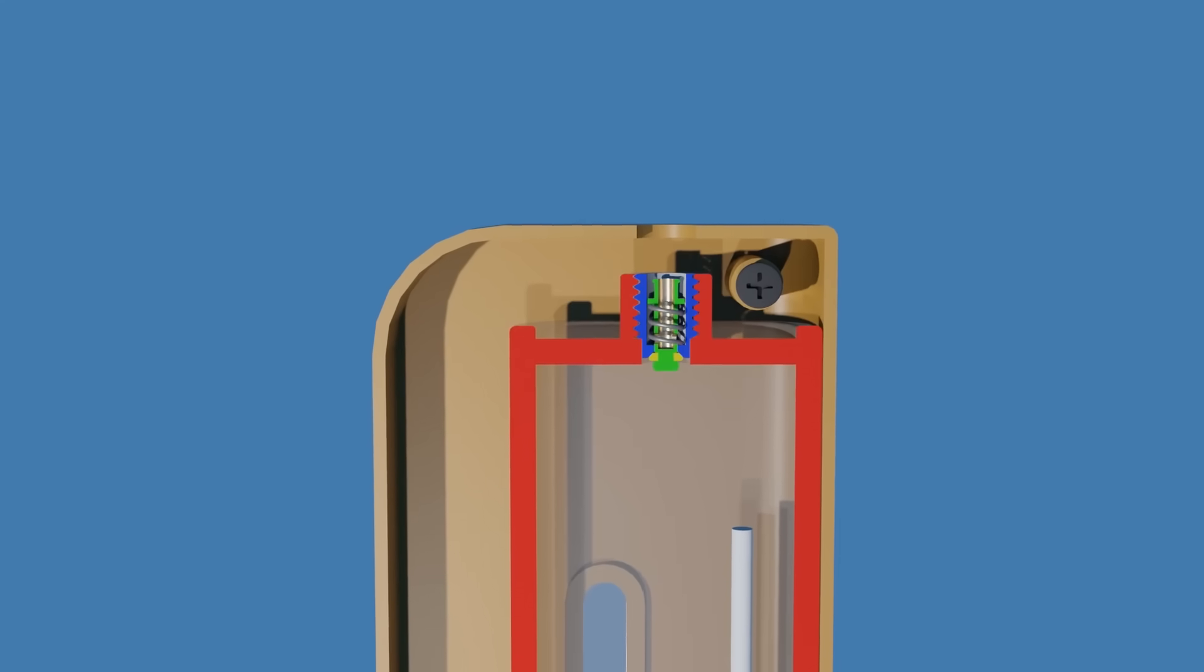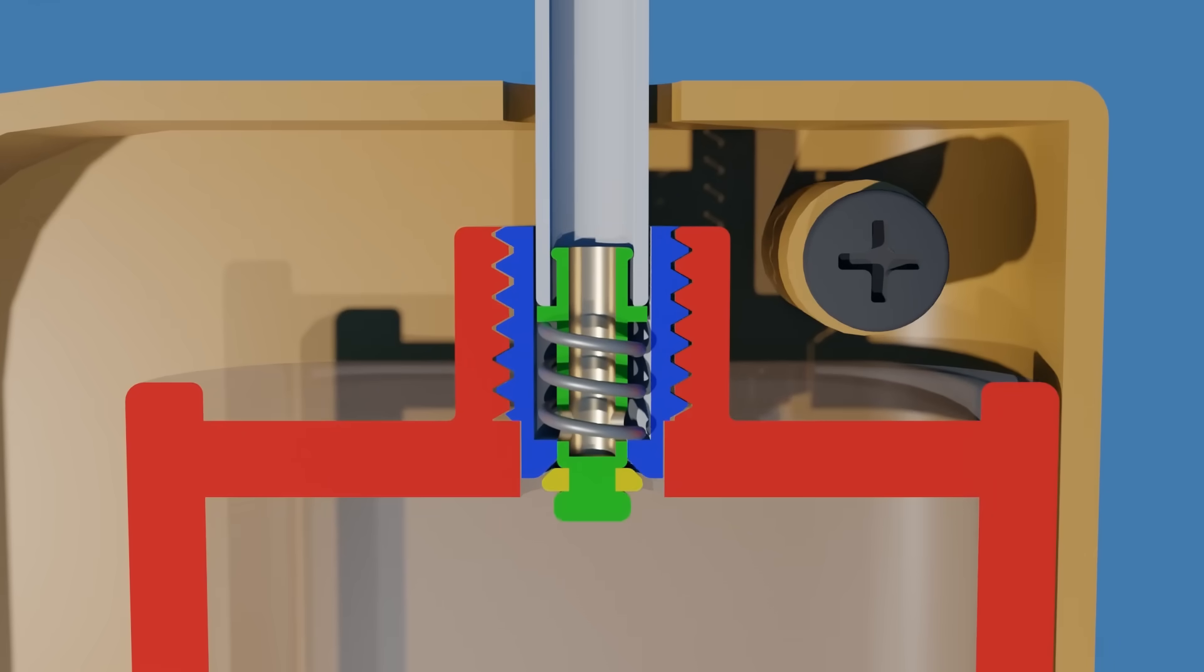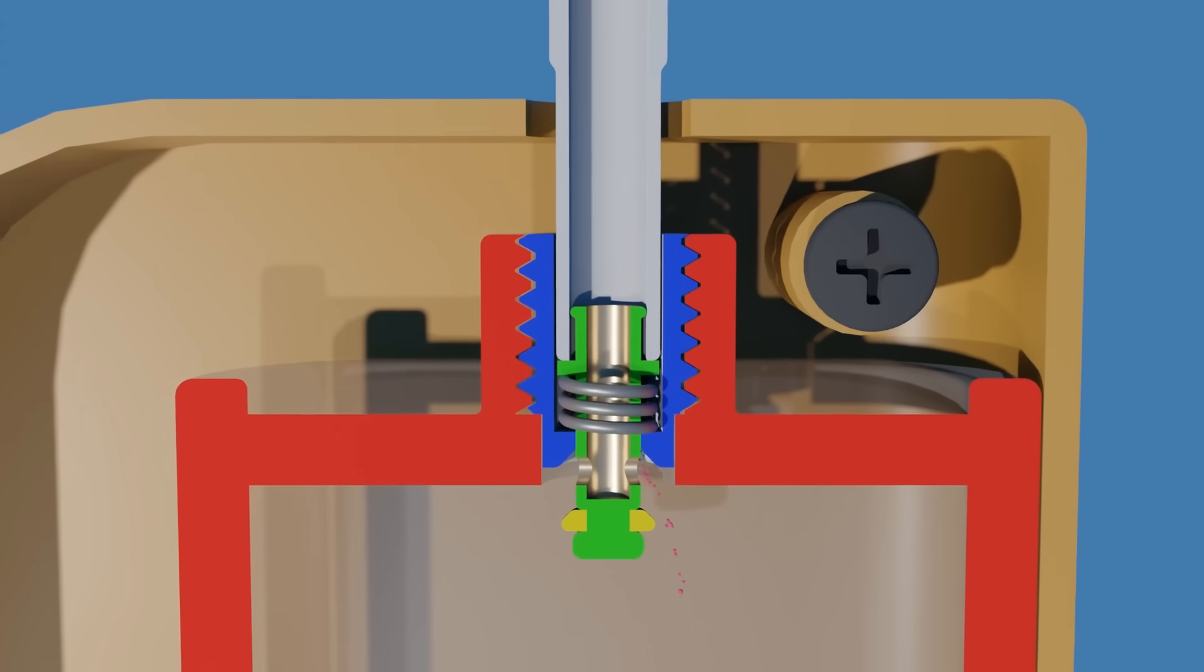Next, the tip of the butane canister must be inserted into the refill valve and pressed firmly against it for about 5 seconds. This will transfer the pressurized butane from the canister to the lighter's reservoir.